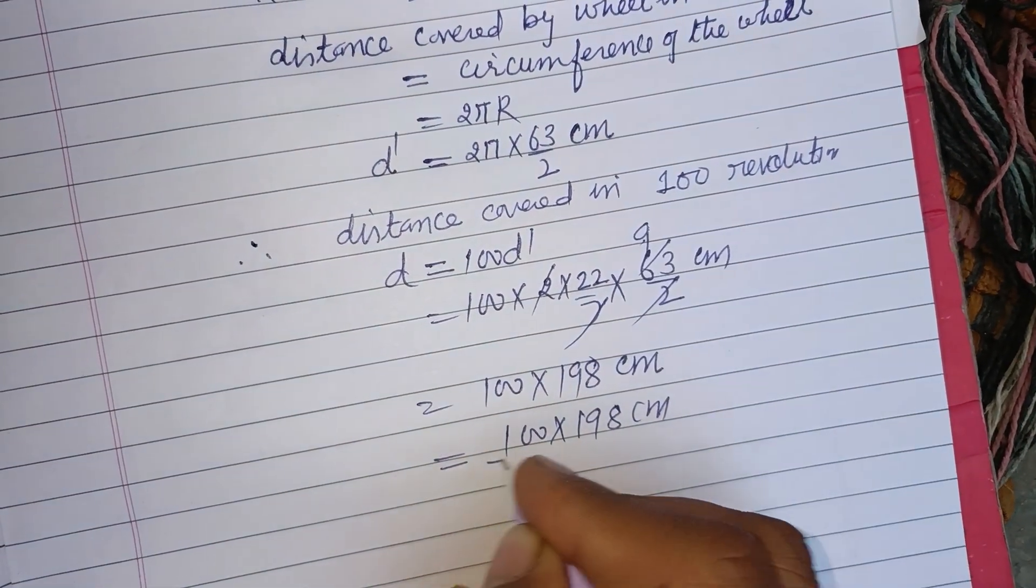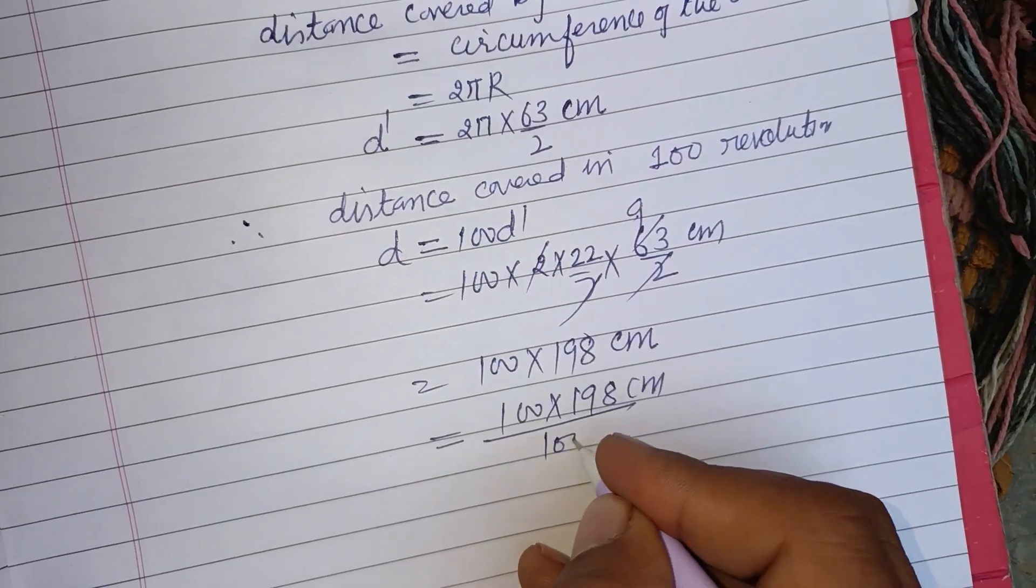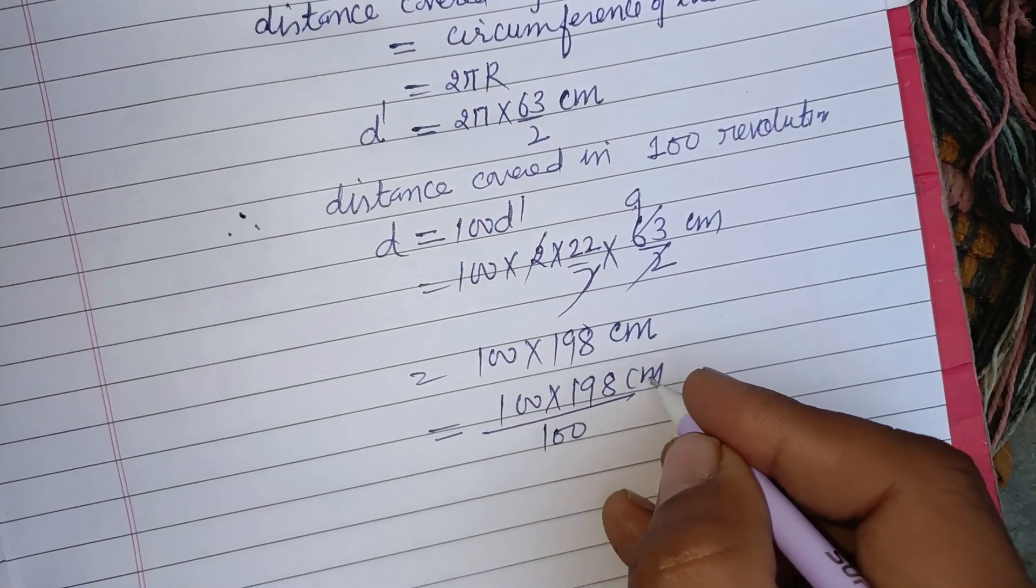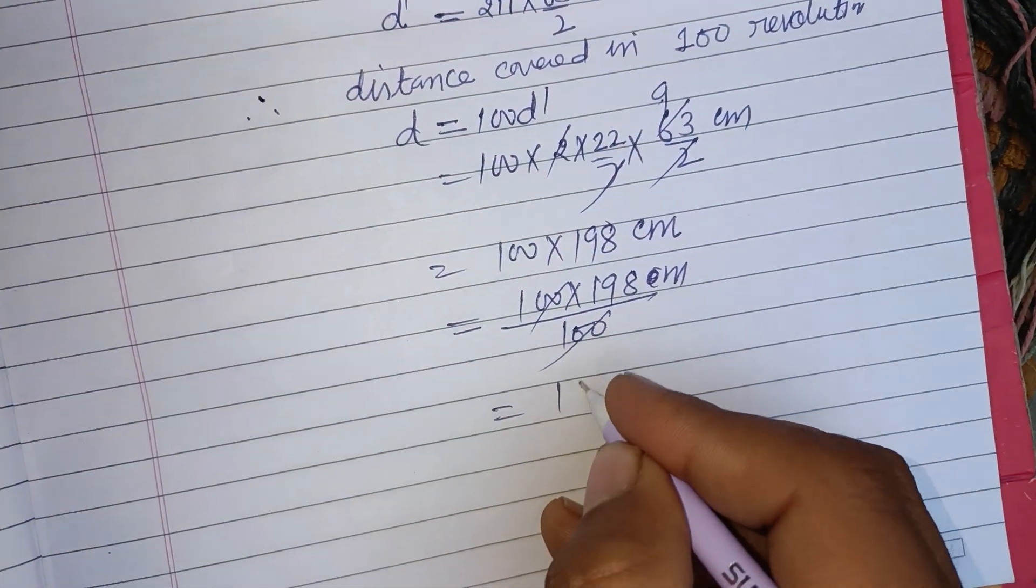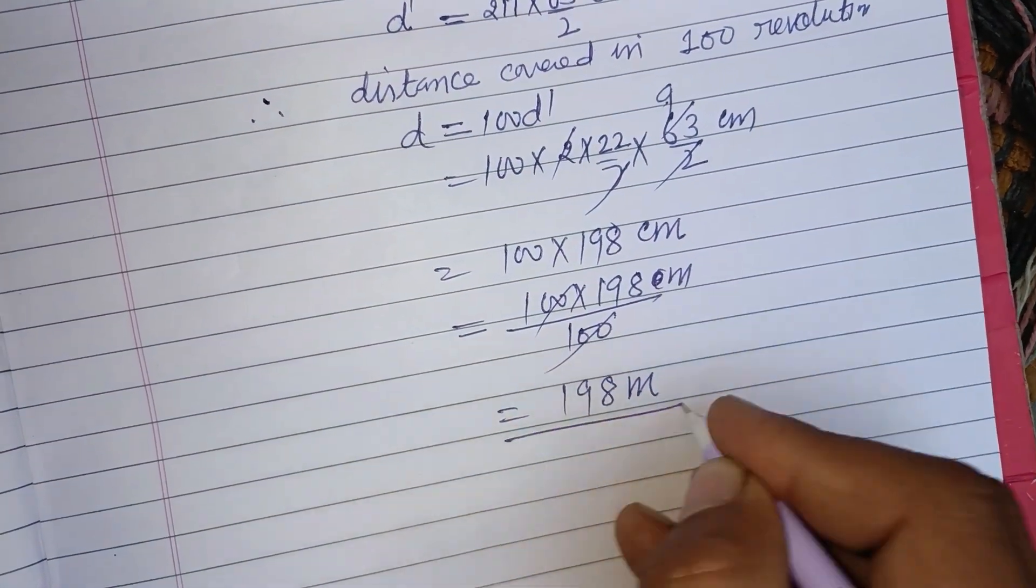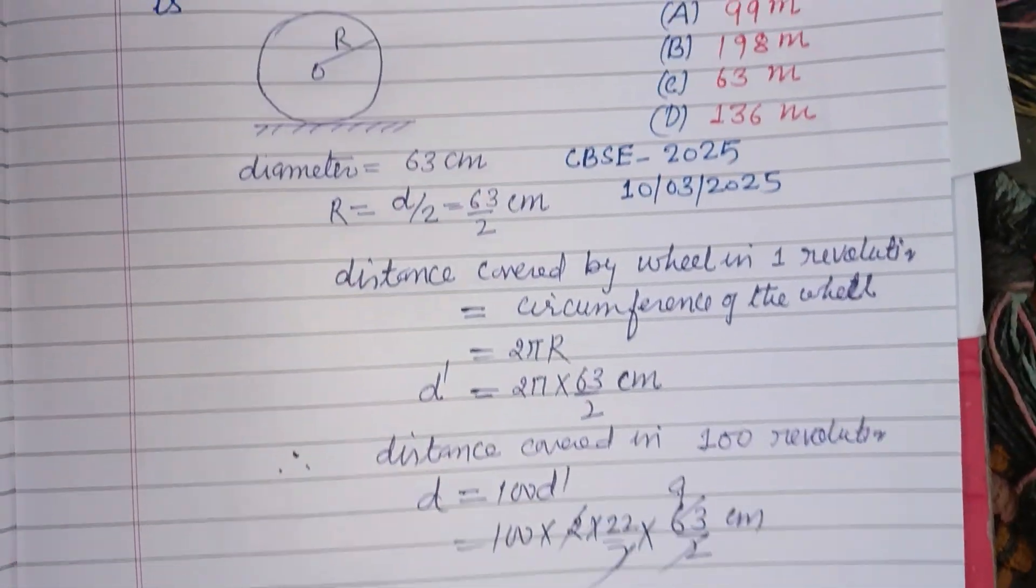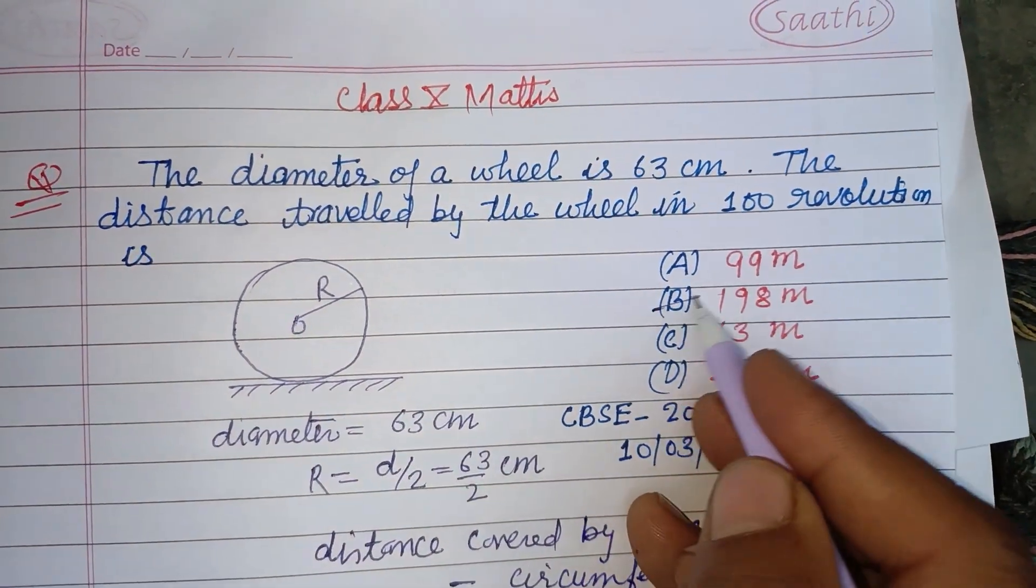So divide by 100, you will get distance in meters. 19,800 divided by 100 equals 198 meters. So the covered distance is 198 meters, which is given in option B. So option B is correct.